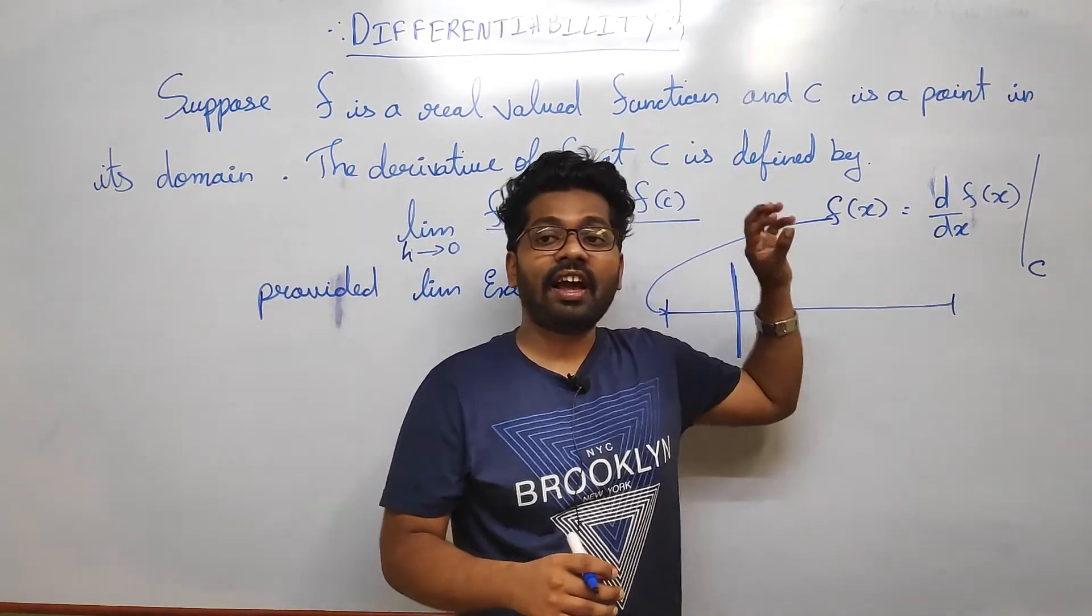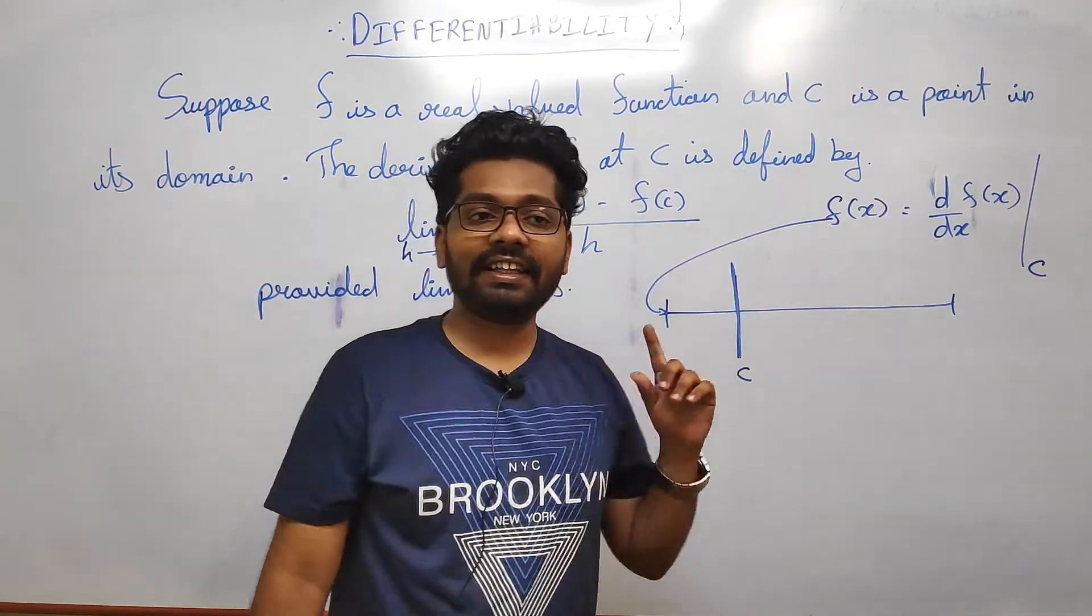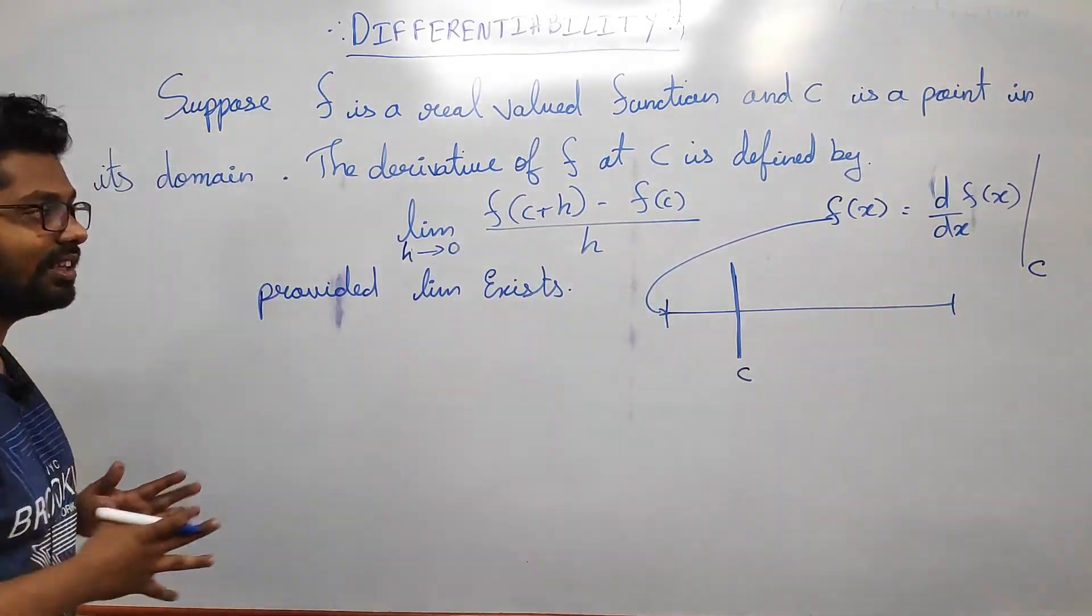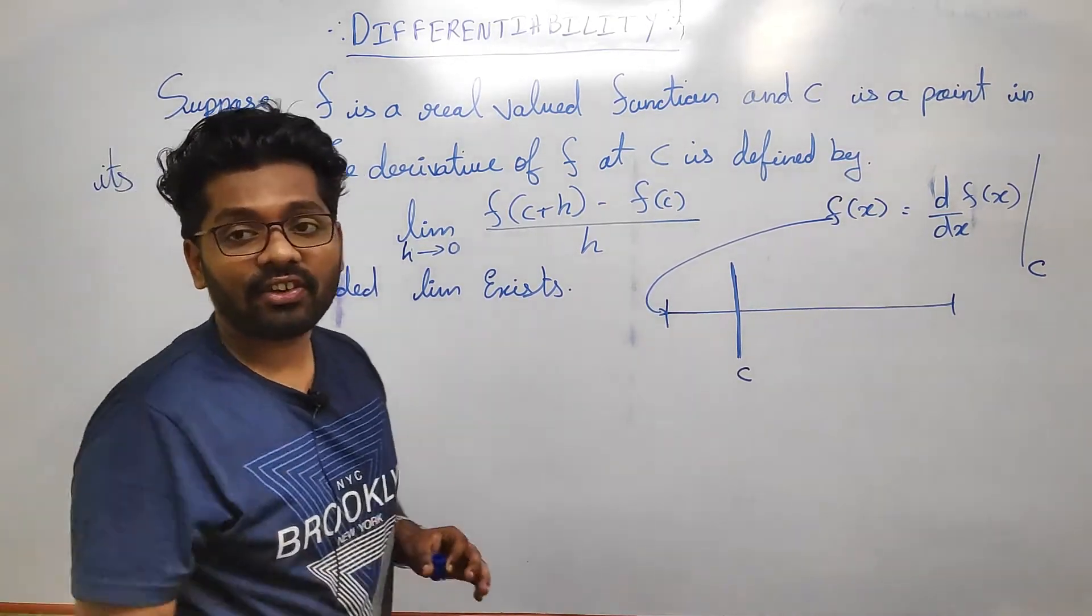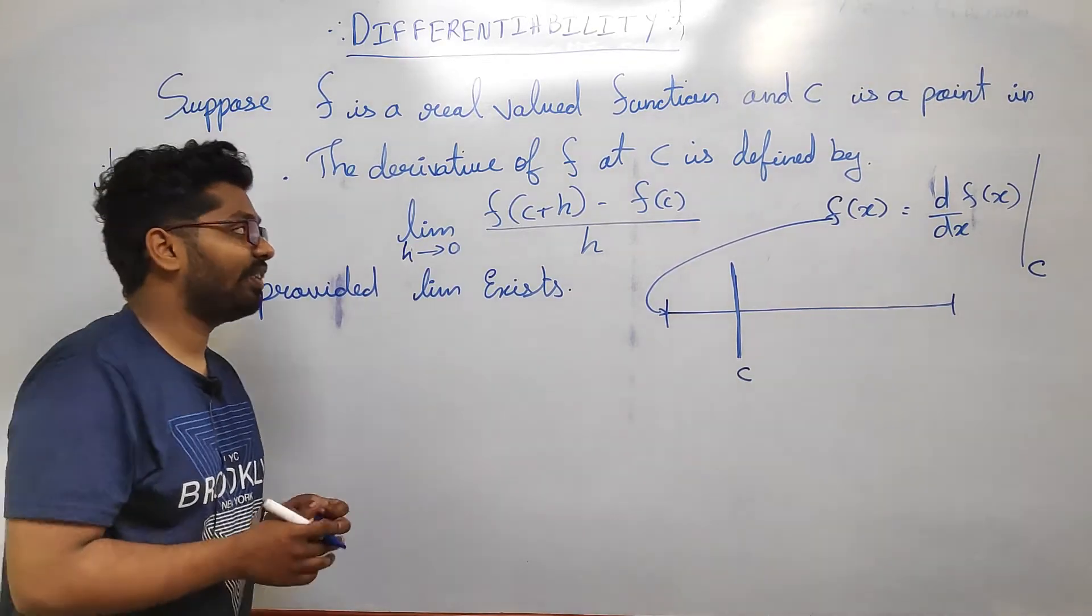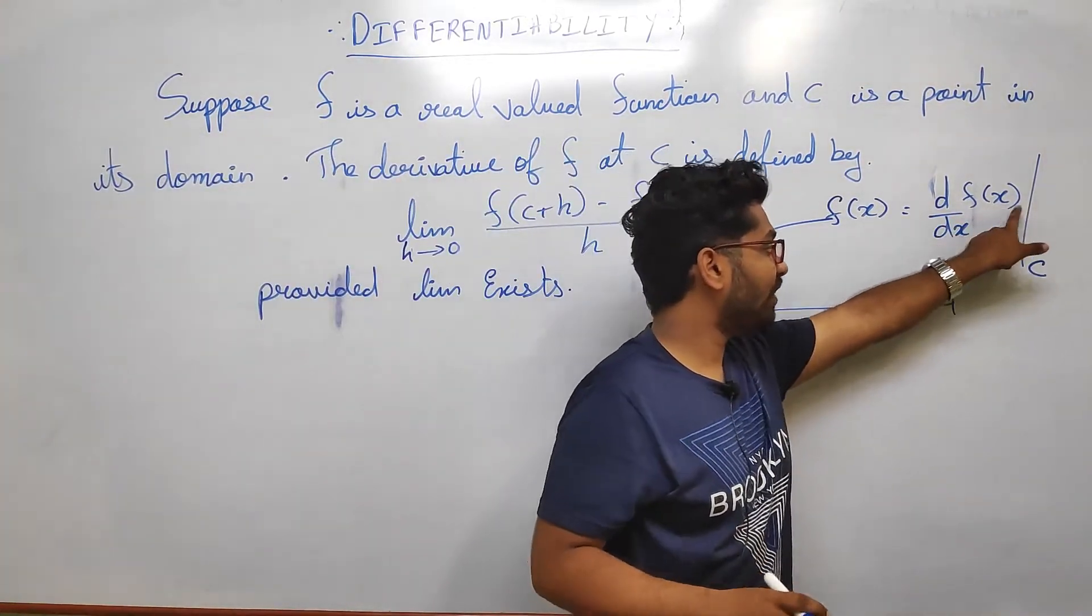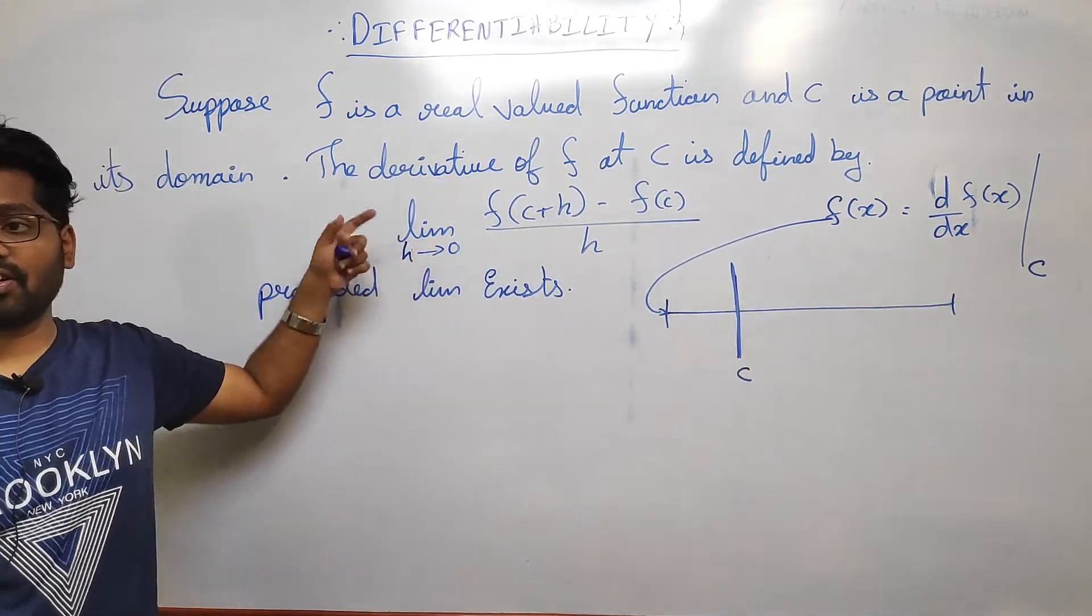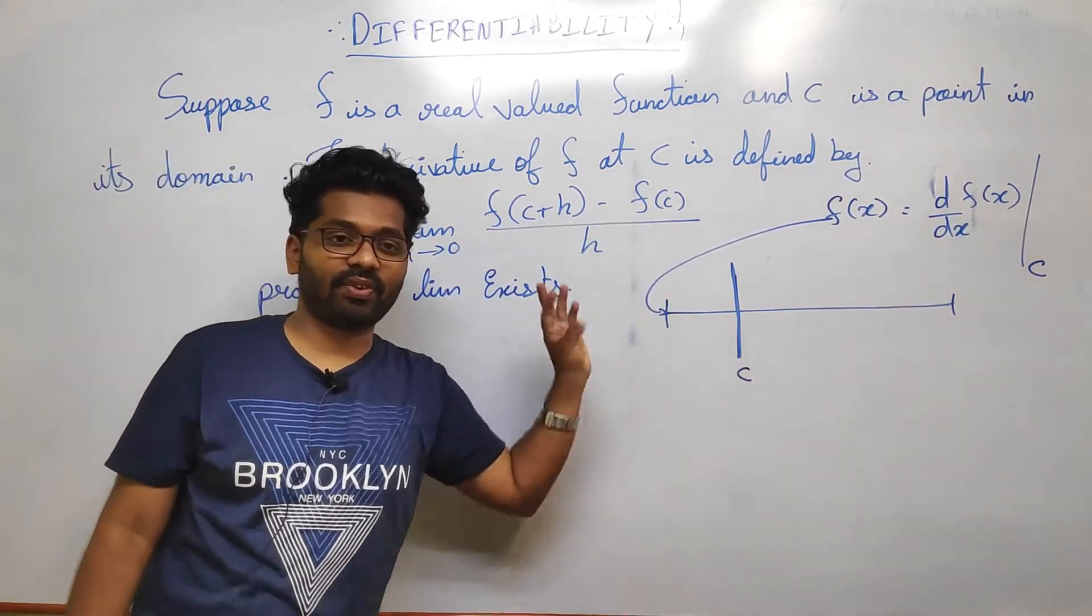This limit definition - whatever is there on the board, it's time to learn now. Suppose f is a real valued function and C is a point in the domain. Then the derivative of f at C is defined by limit of h tending to 0: [f(c+h) - f(c)]/h.